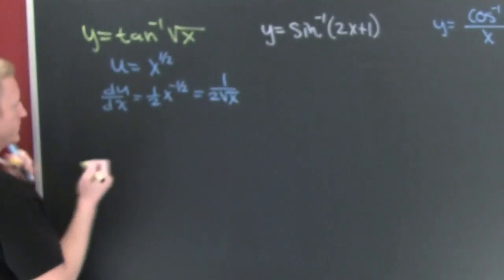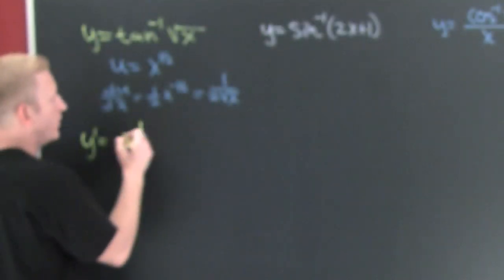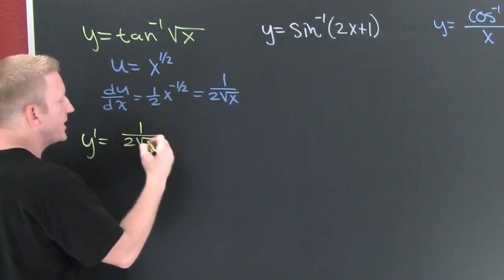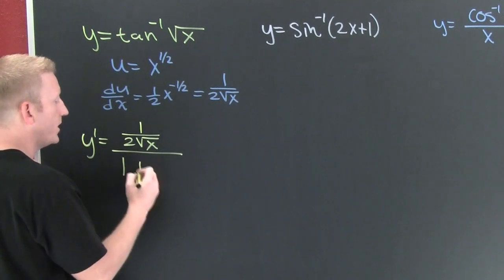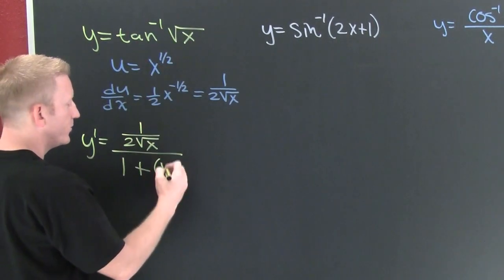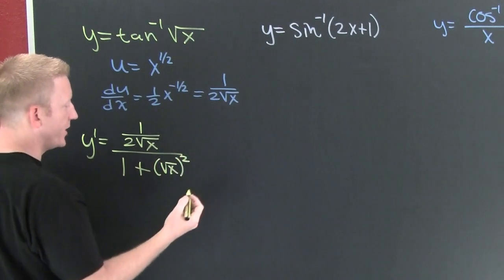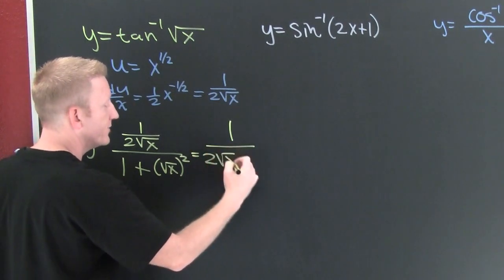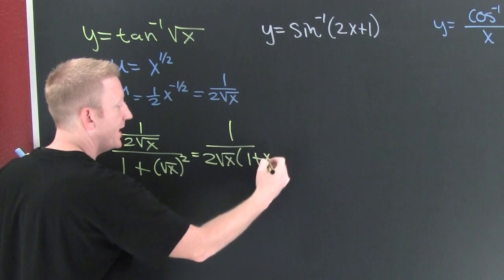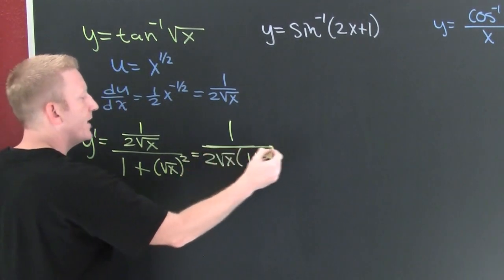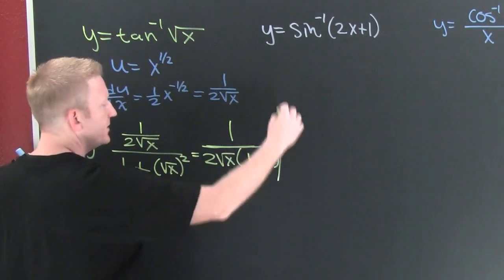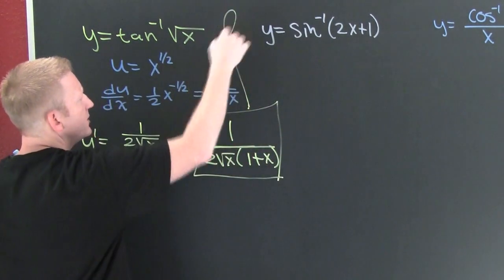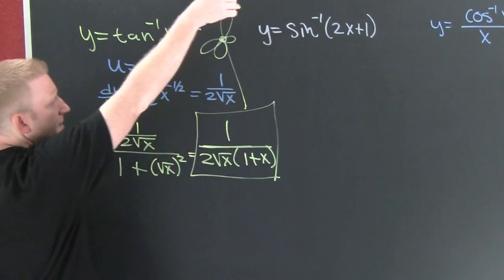So then, if I'm looking for y prime, I know, it's the derivative of u with respect to x, 1 over 2 root x, divided by 1 plus u squared, root x squared. Finish him. Clean that up. Yeah, so then this is 1 over 2 root x times 1 plus x. Very nice. You can multiply it out, but hey, why don't we just leave it like that.